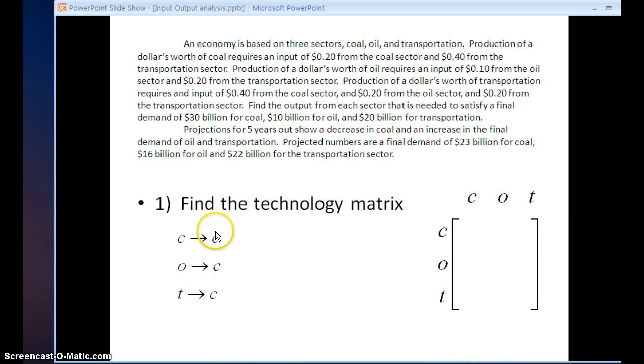So the effect of coal, oil, and transportation on coal all going in this first column of my technology matrix. In my word problem, I'm focusing on the second sentence. And I'm going to take the numbers from this sentence and fill them in on my arrows. So it's going to take 20 cents on the dollar of coal to produce coal. No money from oil to produce coal. And 40 cents on the dollar from transportation to produce coal. So I take these numbers and I stick them in my technology matrix.